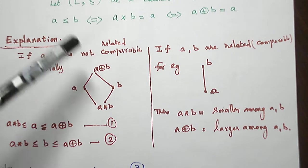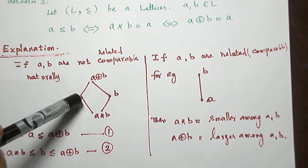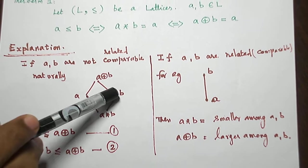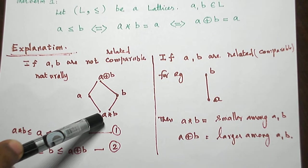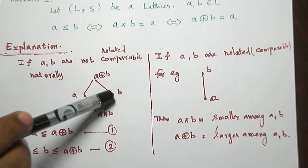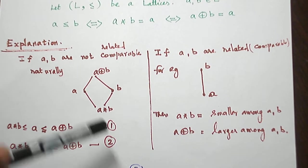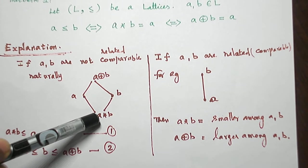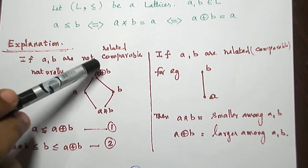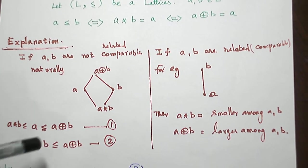Let me explain the background of this result. Suppose there are two elements that are not comparable, not related to each other. A∧B is the meet operation — the greatest lower bound from the previous level. A∨B is the join operation — the least upper bound going to the next level. So naturally A∧B is a smaller element than both A and B, and A∨B is a larger element than both A and B.